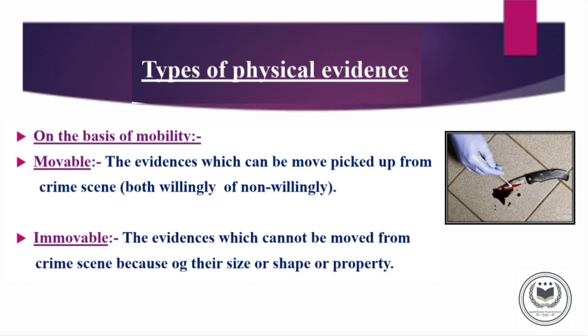Secondly, the Immovable type of Physical Evidences are those which are generally large in size. Therefore, they cannot be moved from the Crime Scene. Therefore, a Forensic Scientist must move to the Crime Scene as soon as a Crime is Reported, to prevent the Contamination and Erasing of the Physical Evidences, basically movable Physical Evidences.